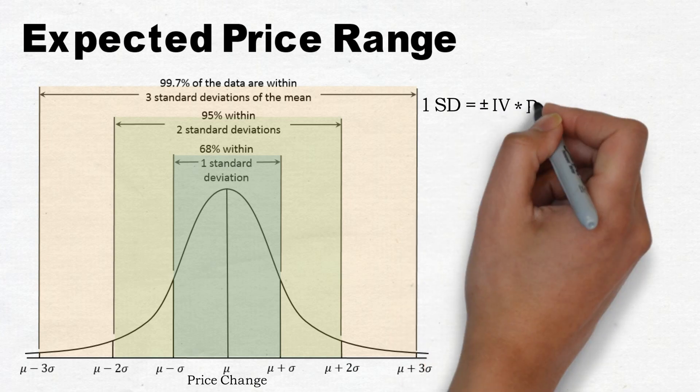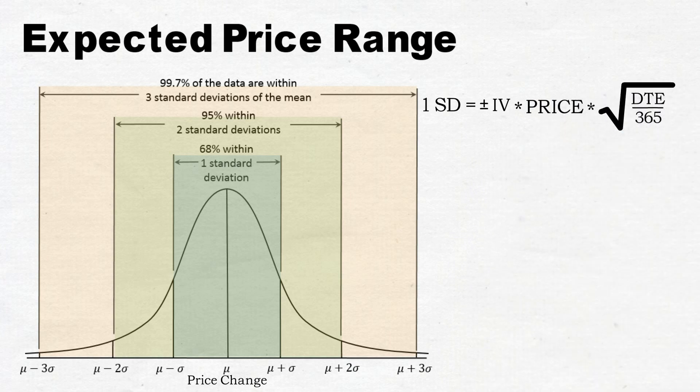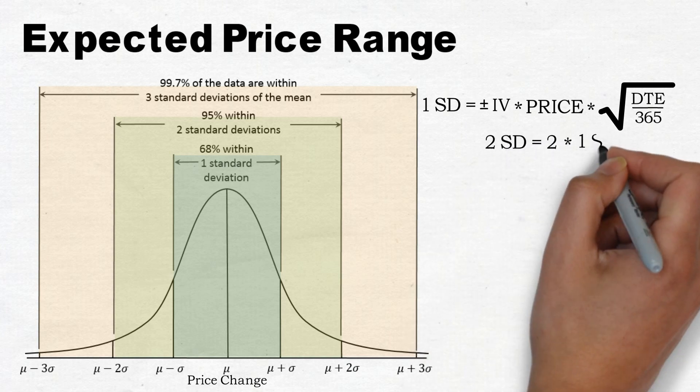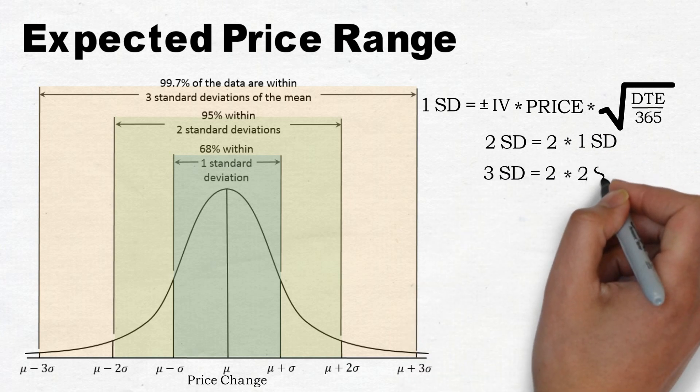One standard deviation equals plus or minus implied volatility times the underlying price times the square root of the time till expiration divided by 365. Two standard deviations can be calculated by multiplying the one standard deviation move by two, and so on.